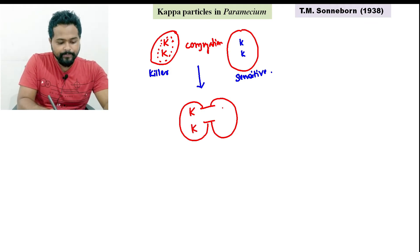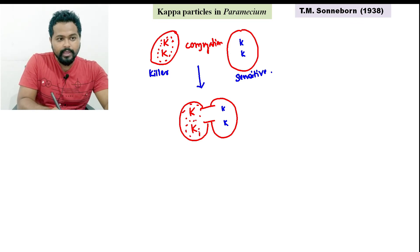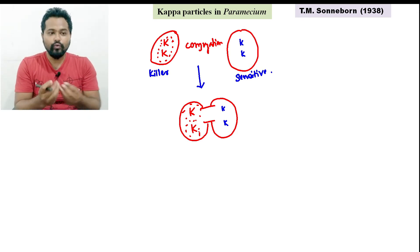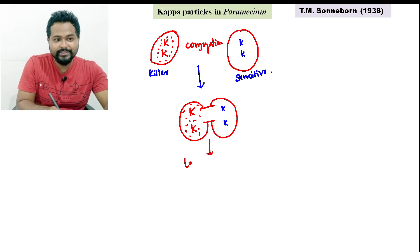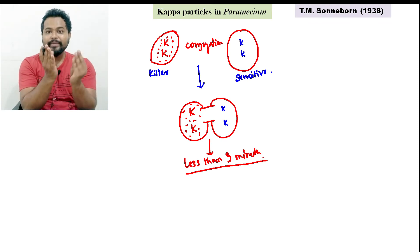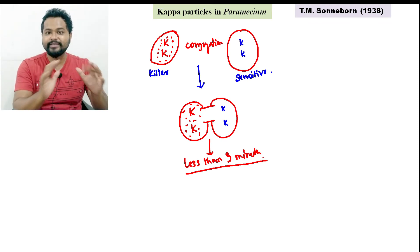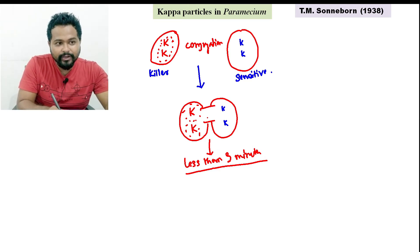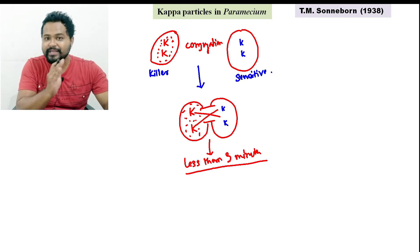If conjugation is allowed for less than three minutes — small k, small k — the kappa particles are not transferred. If conjugation is allowed for less than three minutes, only nuclear material is exchanged; cytoplasm material is not exchanged.